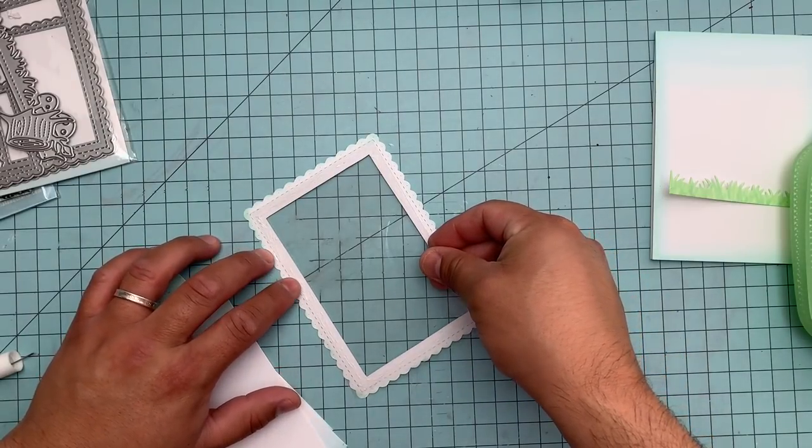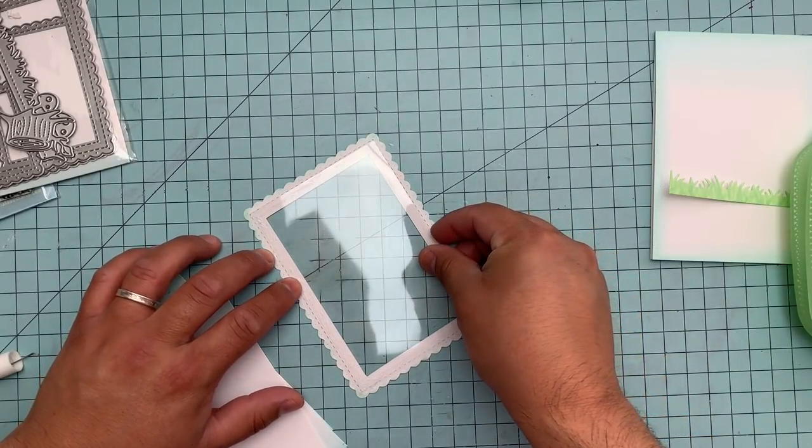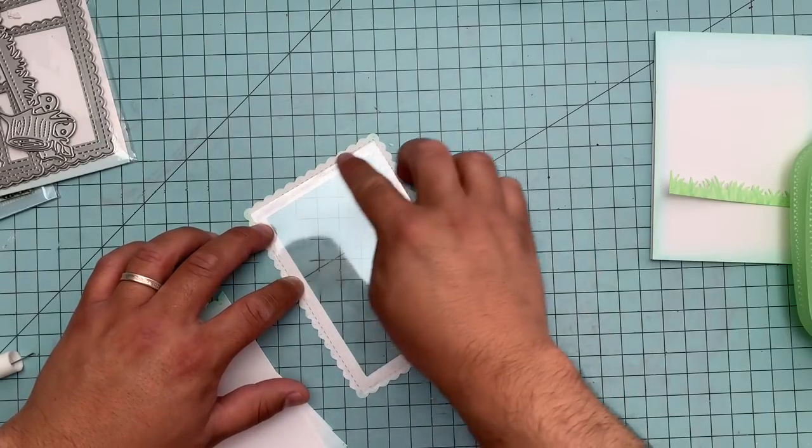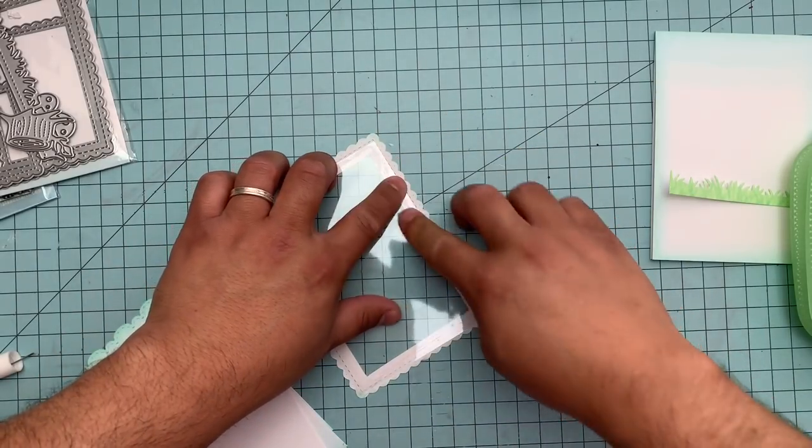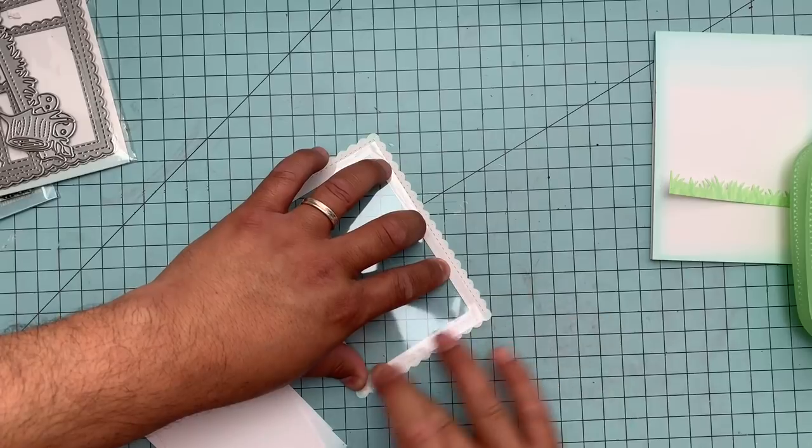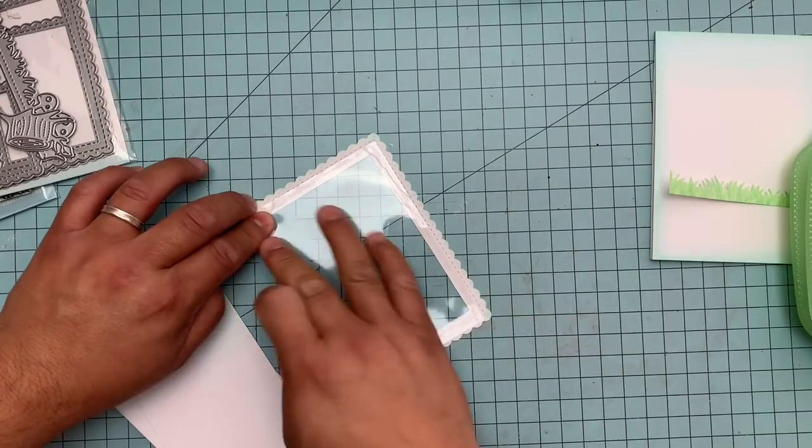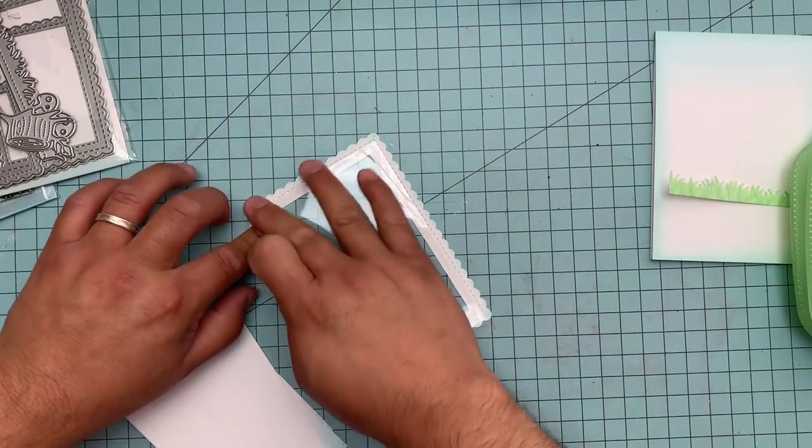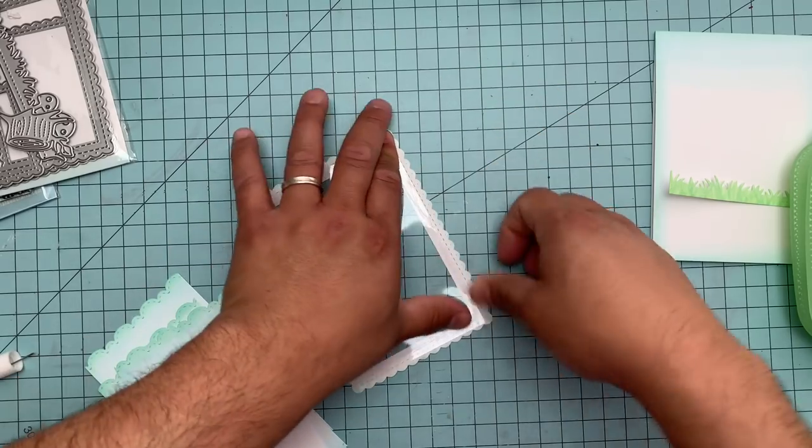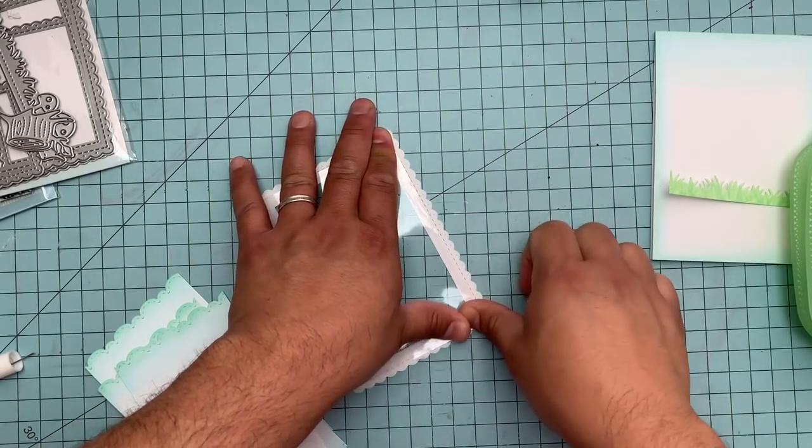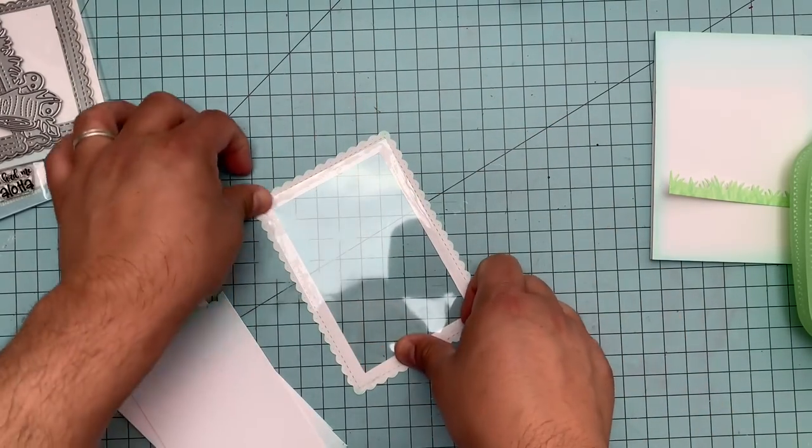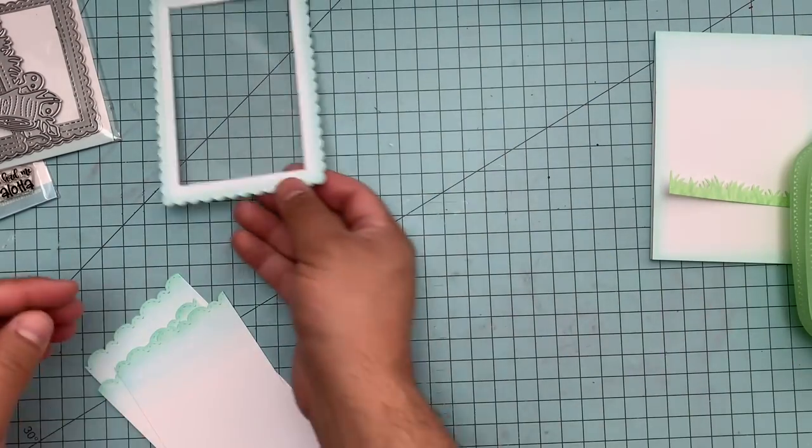Right now what we're going to do is add the acetate to the front of the card, the frame of the card where we're going to put our sequins to make it a shaker card. I like to use wet glue because it works better for acetate since it is non-porous.